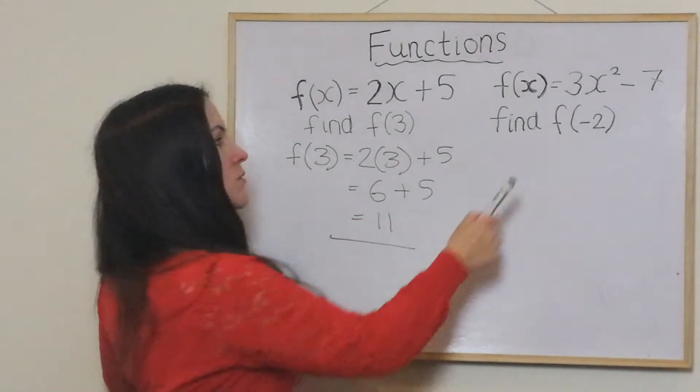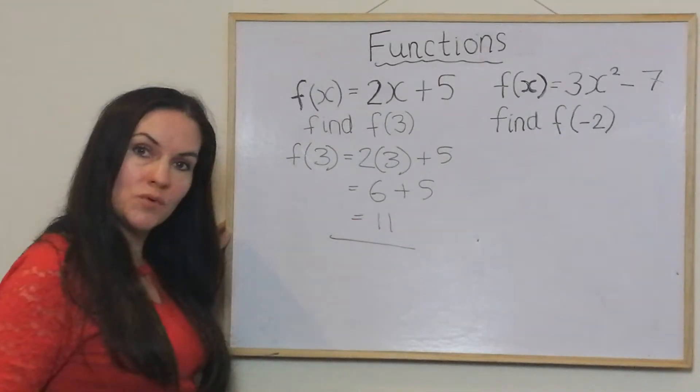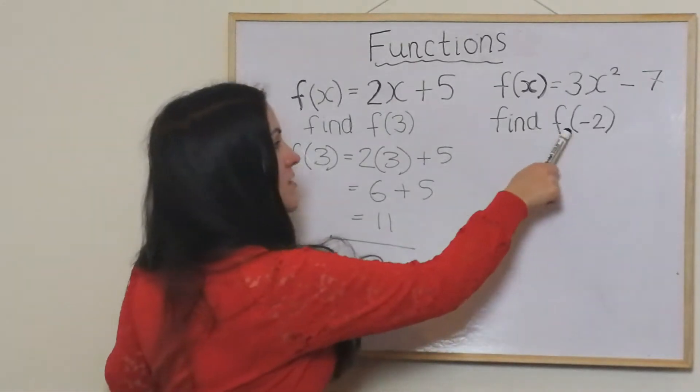I'll do the next one. f of x is 3x squared minus 7, find f of negative 2.